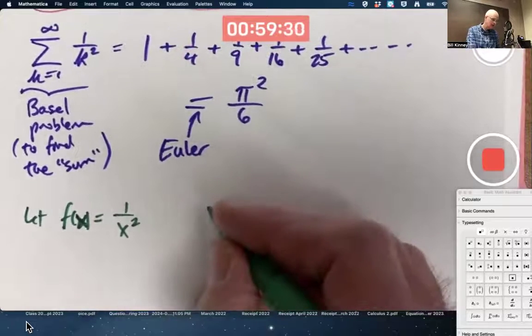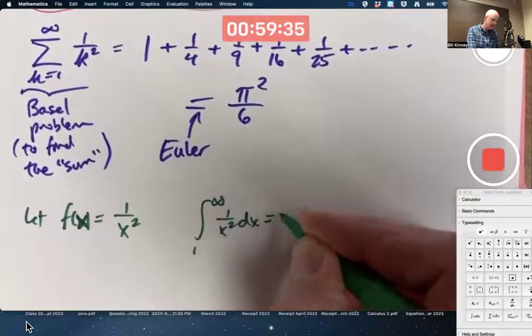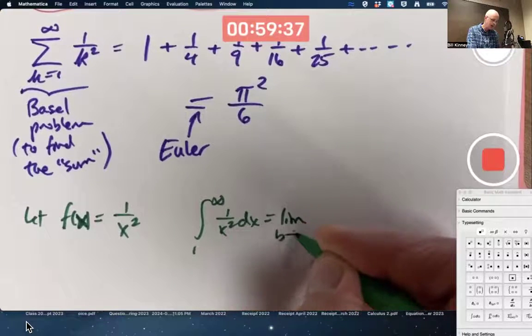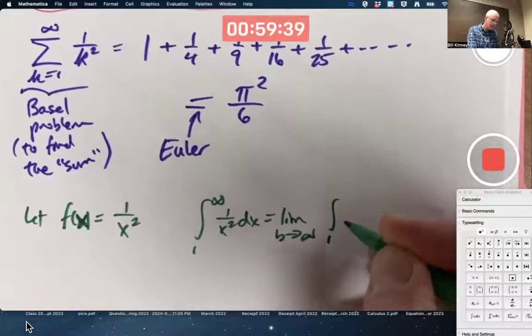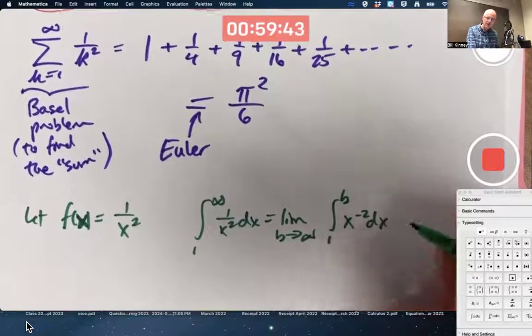to the convergence of the improper integral of this from 1 to infinity. Chapter 7, we know the improper integral of f of x. Well, again, by definition, there's a limit of proper integrals